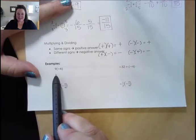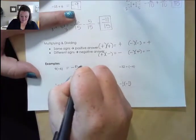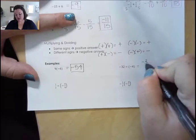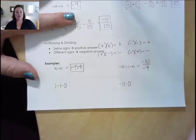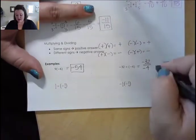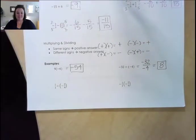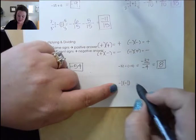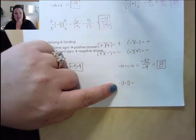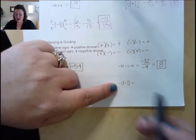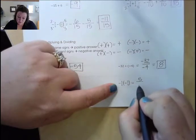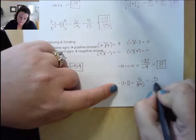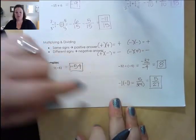Regular numbers are straightforward: 9 times negative 6 gives negative 54 because the signs are different. Negative 32 divided by negative 4 — some people write it as negative 32 over negative 4 — negative divided by a negative becomes positive, so this is positive 8. With fractions, negative 1 third times negative 5 ninths: negative times negative gives positive. When multiplying fractions, I just multiply straight across — 5 over 3 times 9. Since there's nothing to reduce, we get 5 over 27.